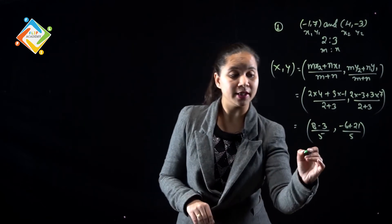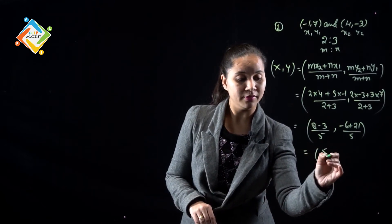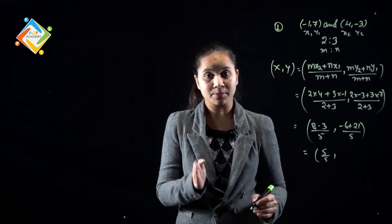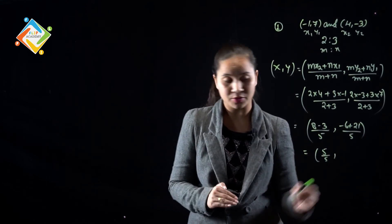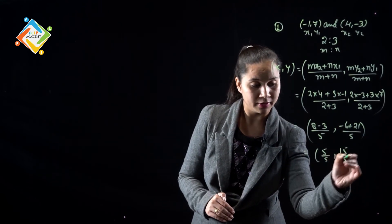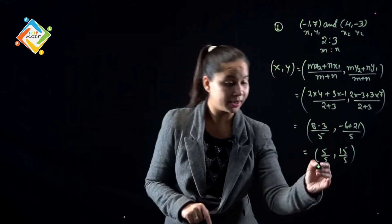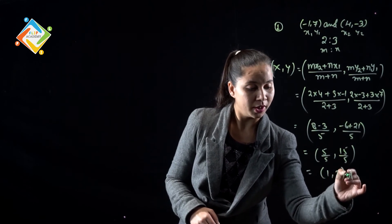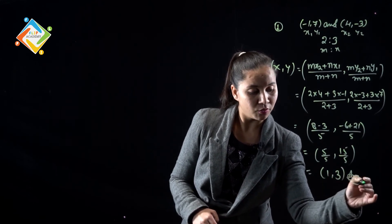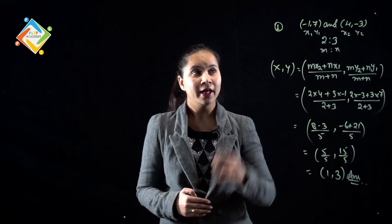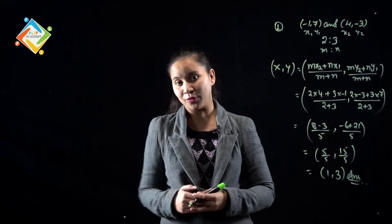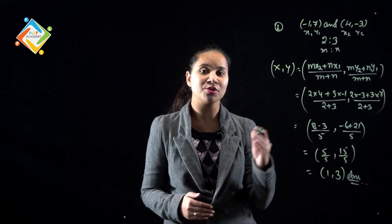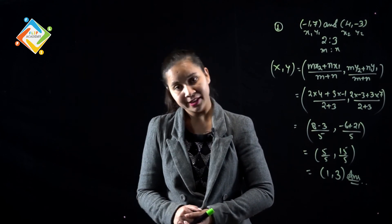So 8 minus 3 is 5 over 5. And -6 plus 21 upon 5 is 15 upon 5. 5 divided by 5 is 1. And 15 divided by 5 is 3. Therefore, this is the coordinate (1,3), which divides (-1,7) and (4,-3) in the ratio 2:3.